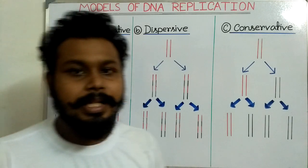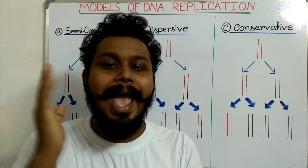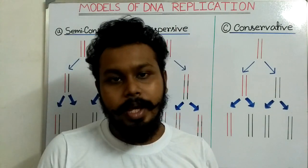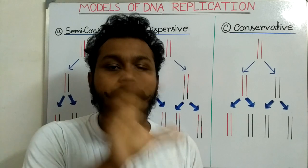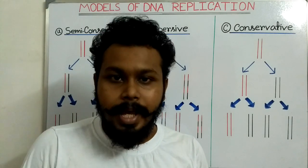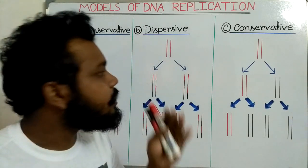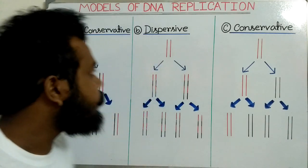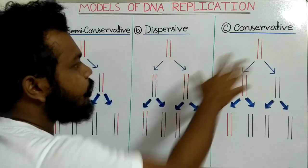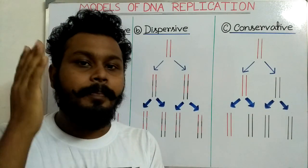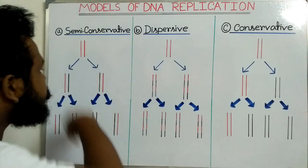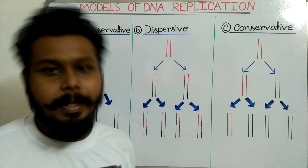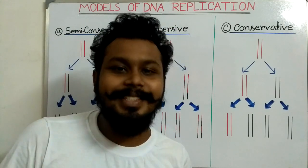All of these models were just predictions — nobody knew about the actual model of DNA replication until Meselson and Stahl showed their experiment. Meselson and Stahl tested all of these models and ultimately proved that the semi-conservative model of DNA replication is the correct model. Thank you for watching this video.